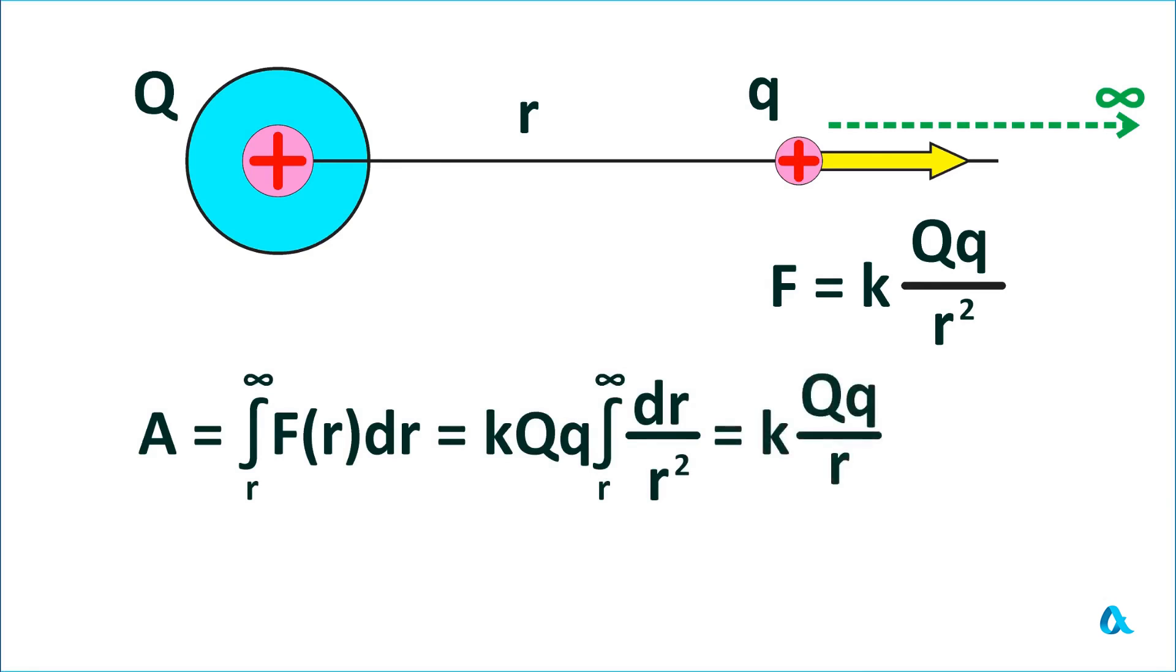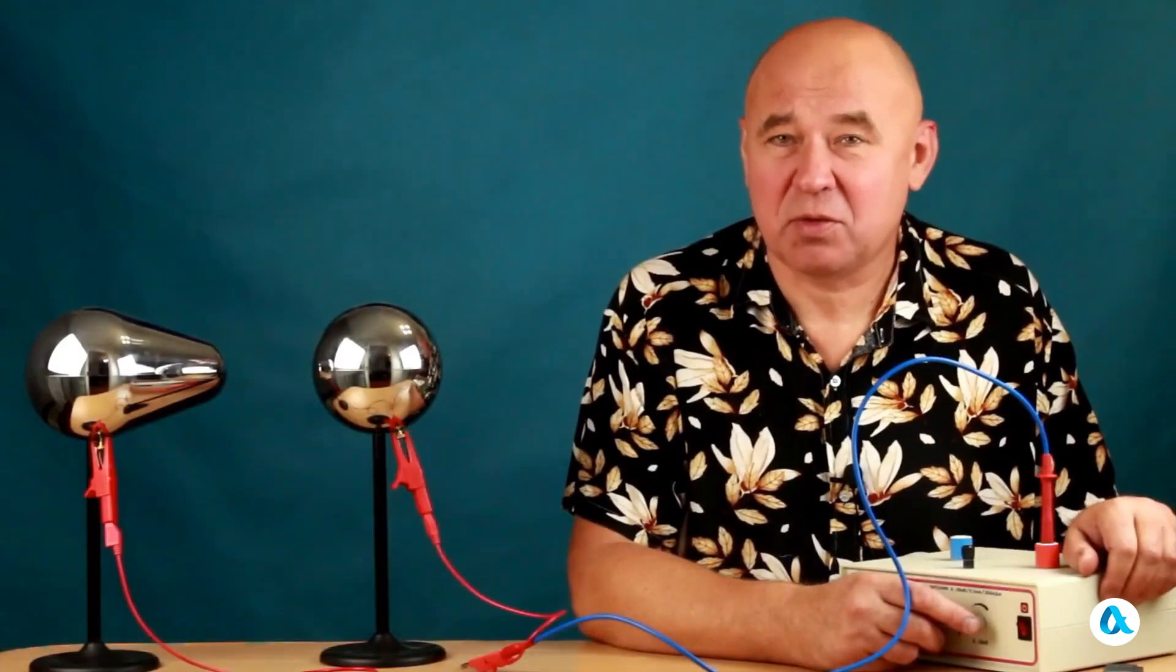The potential at the point where the test charge is located is this work divided by the magnitude of the test charge, and it equals kQ/r. And to find the potential of the charged sphere itself, you need to substitute the radius of the sphere R in the denominator instead of r. And it equals kQ/R.